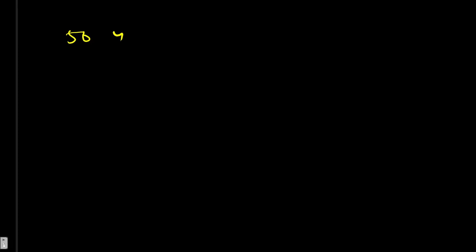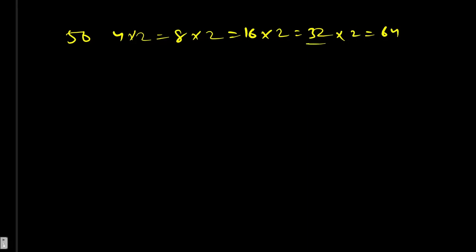Let's look at another example: dividend 50, divisor 4. We check 4 < 50, multiply by 2 to get 8; 8 < 50, multiply to get 16; multiply to get 32; multiply to get 64, which exceeds 50. So we stop at 32. Subtract 32 from 50, giving updated dividend 18. The step count is 2×2×2 = 8 steps, covered in only 3 doubling operations — a huge time saving.